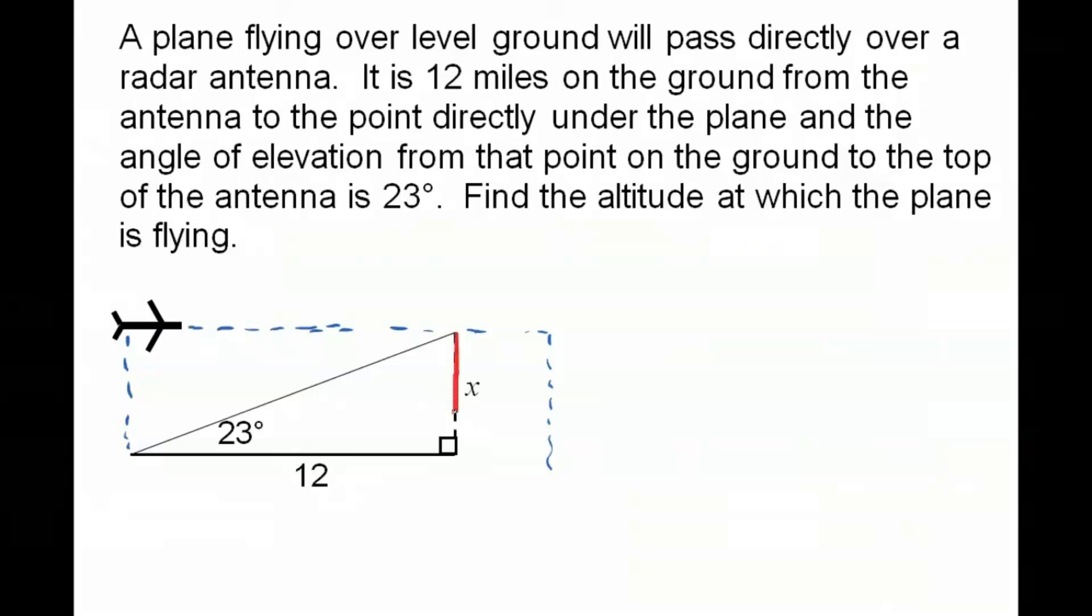So let's take a look at our antenna which is right here. The plane is going to fly directly over that antenna. That's my x. And 23 is the angle of elevation. So if I'm standing with my eyes right here and I look up to the top of the antenna, 23 degrees is my angle of elevation. And I have 12 miles here on the ground from the antenna to the point directly under where the plane is right now.